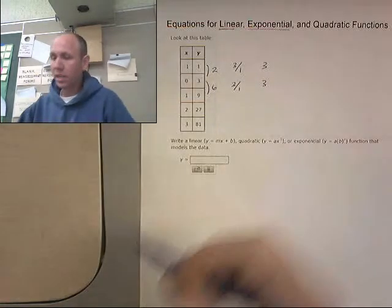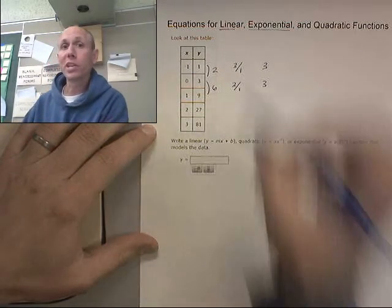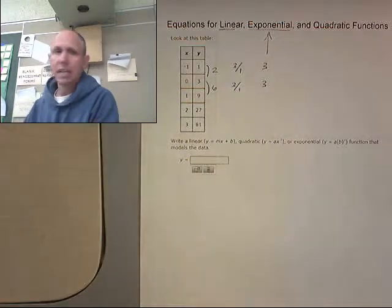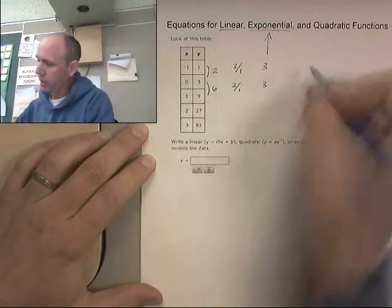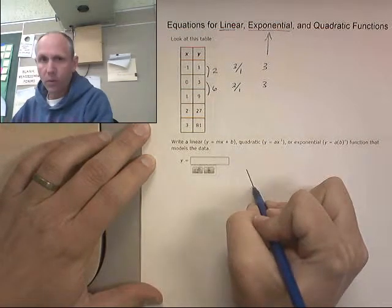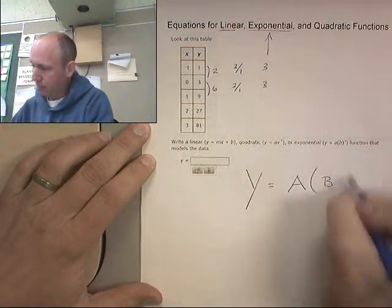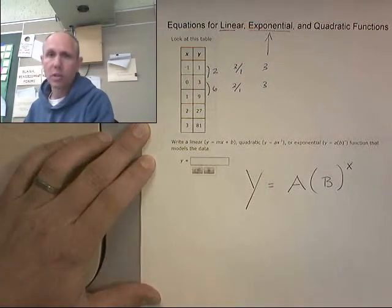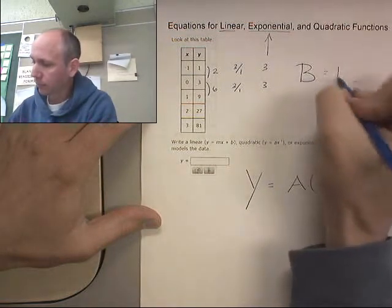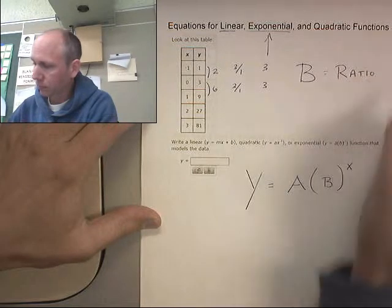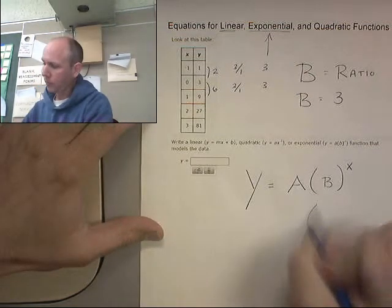9 to 6 is also a 3 to 1 ratio, it went up by 3. So I have this ratio of 3. Each time it's going up by 3. It's going 1 times 3 is 3, 3 times 3 is 9. It's going up by a factor of 3 each time. So this is looking like an exponential. So how do I use that information to build an equation in this form? I'm looking for something that looks like y equals a, b to the x. Well, b is this ratio. So I know that b equals 3.